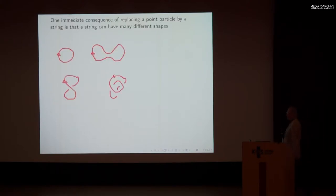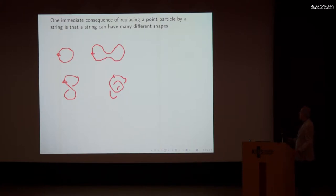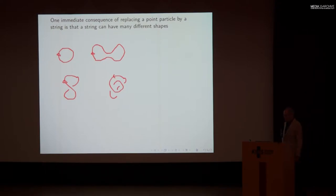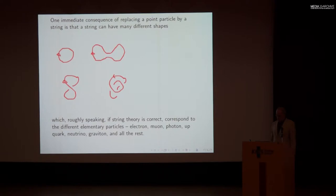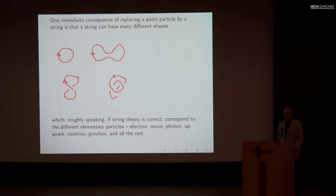One immediate consequence of replacing a point particle by a string is that a string can have many different shapes. Roughly speaking, if string theory is correct, the different shapes correspond to the different elementary particles — the electron, the muon, the photon, the up quark, the neutrino, the graviton, and all the rest.